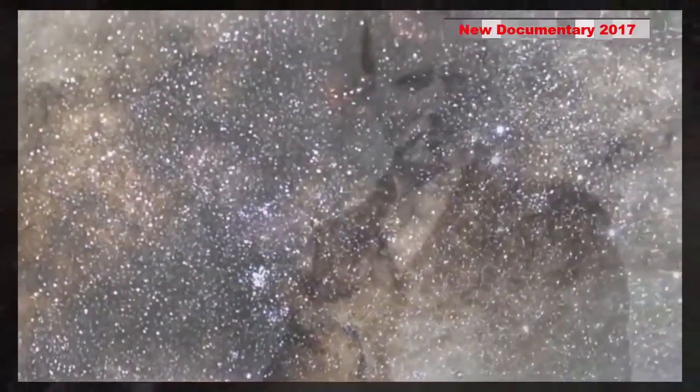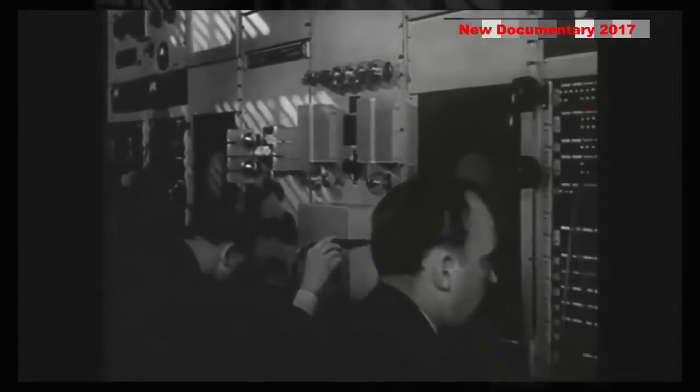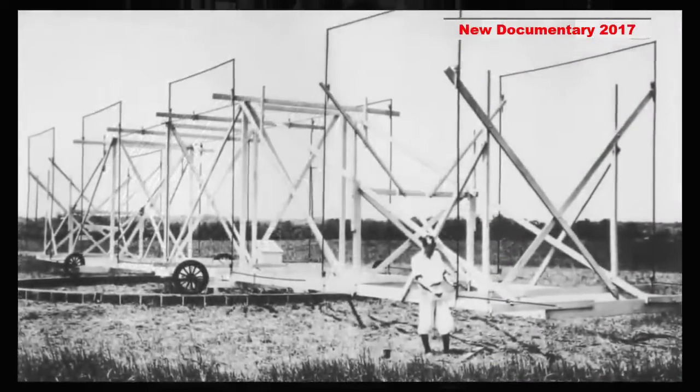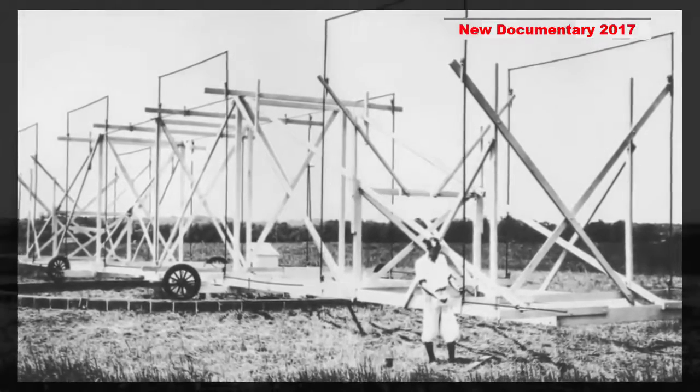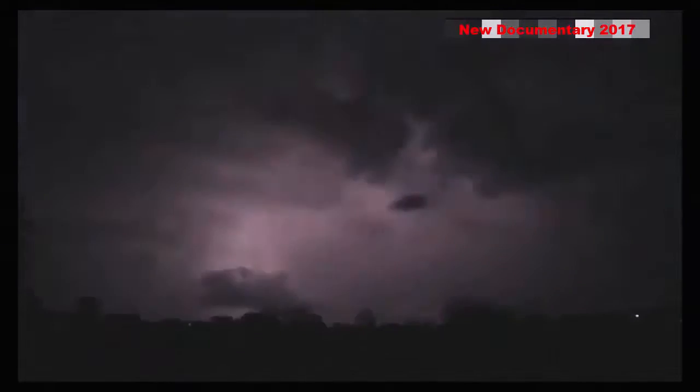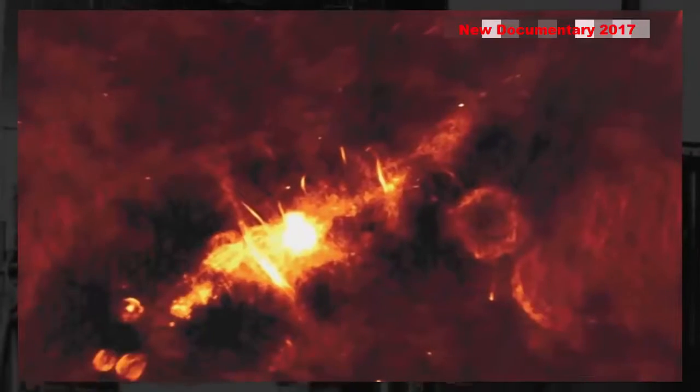The first to take notice was physicist Carl Jansky back in the 1930s. He had been asked by his employer, Bell Telephone Labs, to investigate sources of static that might interfere with radio voice transmissions. Using this ungainly radio receiver, Jansky methodically scanned the airwaves. He traced most of the static to thunderstorms nearby and far away. There was one signal he could not explain. It was a hiss of radio noise that sounded like steam. Jansky narrowed it to a region in the sky, the constellation of Sagittarius, in the direction of the center of the galaxy.